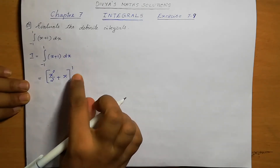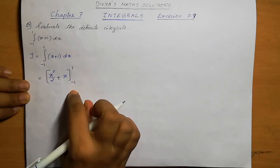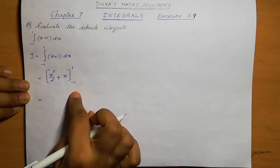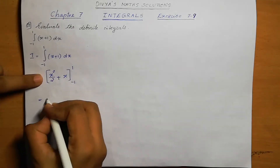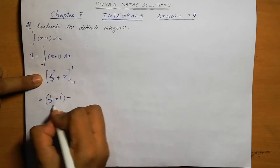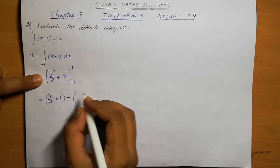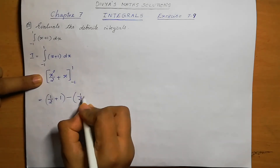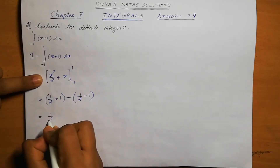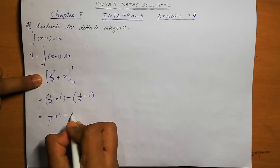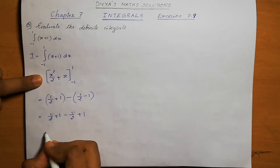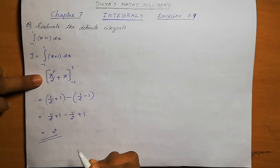We apply upper limit minus lower limit. Upper limit is 1 and lower limit is minus 1. Substituting x equals 1: 1 square by 2 plus 1. Minus lower limit substituting x equals minus 1: minus 1 square is 1, so 1 by 2, and x becomes minus 1. Opening the bracket: 1 by 2 plus 1 minus 1 by 2 minus minus 1. So 1 by 2 minus 1 by 2 is 0, and 1 plus 1 is 2. The answer is 2.